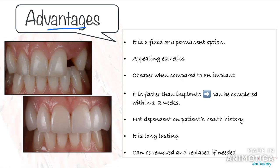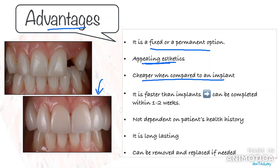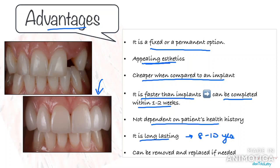Having said all that, FPD still remains one of the most sought-after options because of the following advantages. It is a fixed or permanent option that does not have to be removed like a removable denture. It does not compromise aesthetics — in fact, a life-like appearance is quite possible with an FPD. It is an economical option, cheaper than a single implant. It is faster than implants and can be completed within a maximum of 1-2 weeks. It is not dependent on the patient's health history, it is long-lasting, and according to numerous studies, the longevity of FPD is estimated to be 8-10 years. You can also remove and replace it if needed.